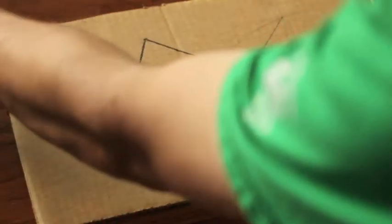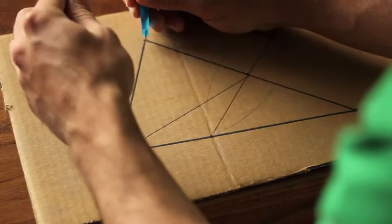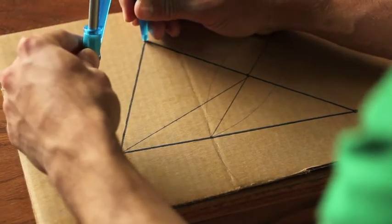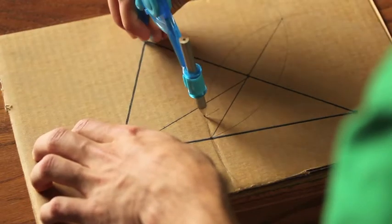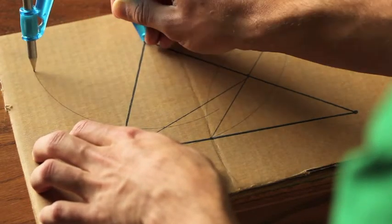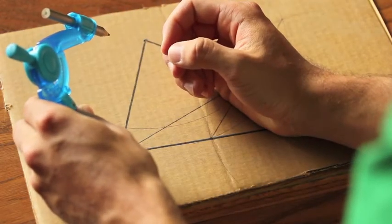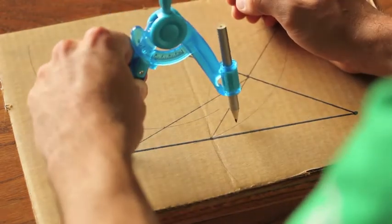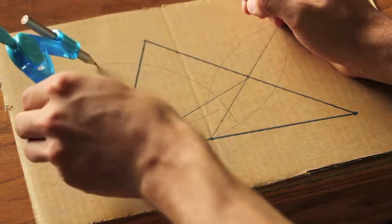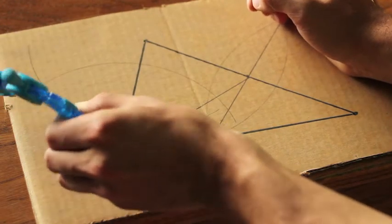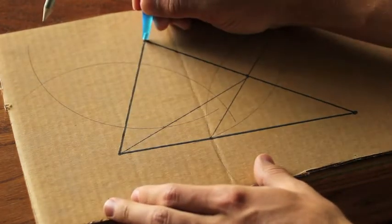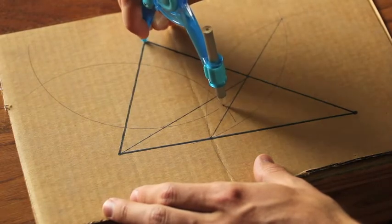And now we do the same thing for this other side. Swing an arc, go over, swing the same arc. It looks like our first one didn't go far enough, so we'll go back and do it one more time. There it is.